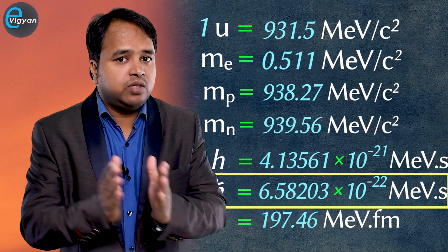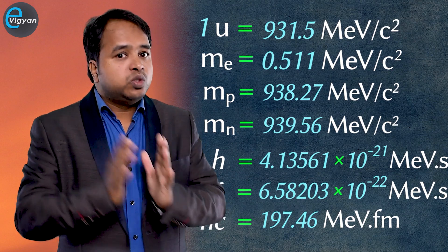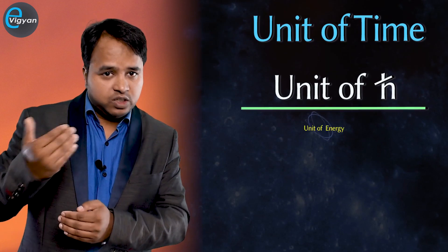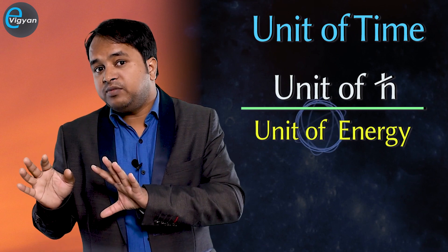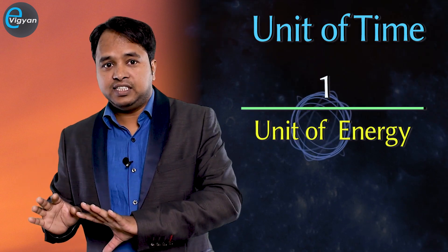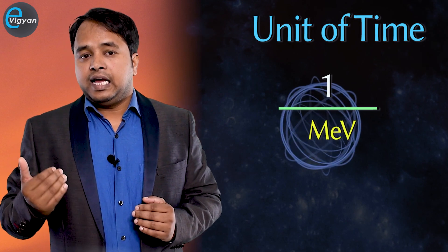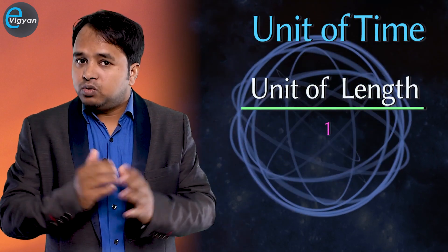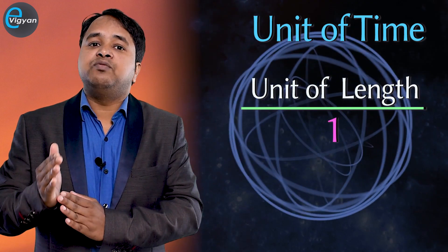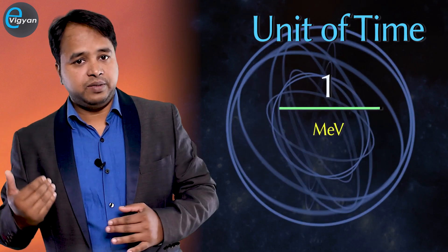Now let's see what is the unit of length and unit of time in natural units. You know that h-cross has the unit of energy times time, so the unit of time will be the unit of h-cross divided by unit of energy. But in natural units, h-cross equal to 1, so the unit of time will be 1 divided by unit of energy, that is 1 upon MeV. You also know that c has unit of length divided by time. In natural units, c equal to 1, so the unit of length is also 1 upon MeV.